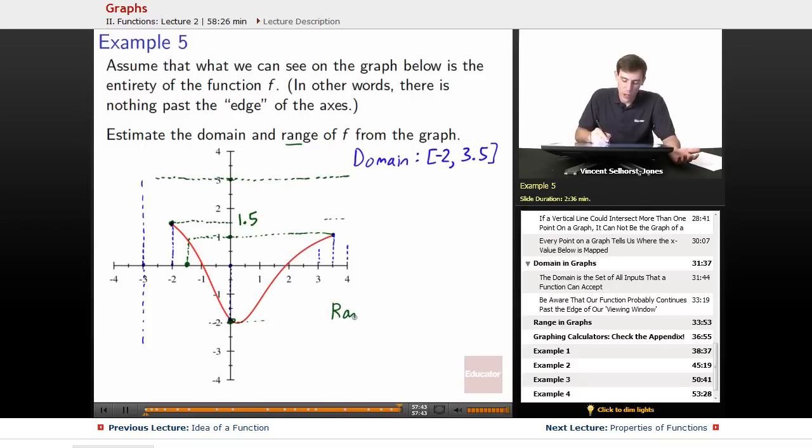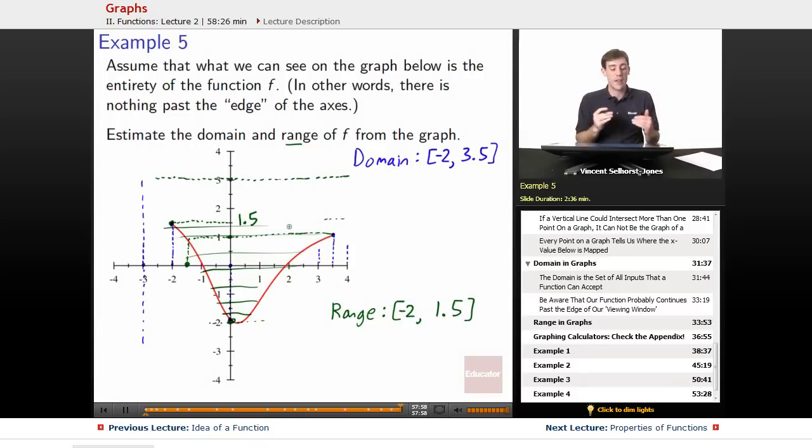And then finally it looks like the lowest we managed to get to is negative 2. So our range, the lowest location on our range is negative 2 and the highest location that we managed to make it to is 1.5 and we hit everything in between. If you go to any location in between, it shows up. So our range is everything in between negative 2 and 1.5 because all of them have something that they are able to contact.